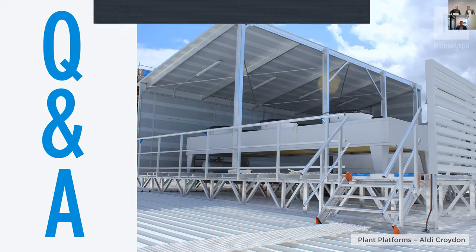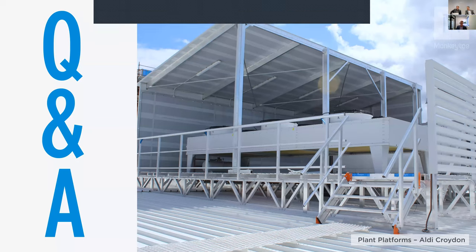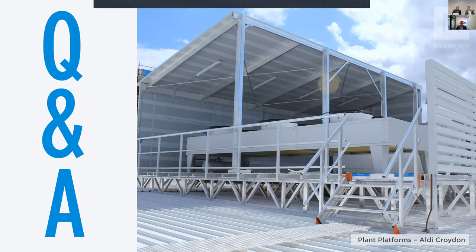Question about the weight of the Mount Gambier platform: the overall weight of the platform itself I'm not 100% certain on as I wasn't directly involved, but I can find out. Typically, the aluminium platform is about 20% of what structural steel is — so that's a general rule of thumb. Question: can a Monkey Toe platform be constructed off timber roof trusses? The simple answer is yes, and it's commonly done. In New Zealand, around 80% of old buildings have timber trusses and timber purlins, so we work on a lot of projects like that. We're very careful in understanding the makeup of that structure to ensure we don't overload the existing structure.